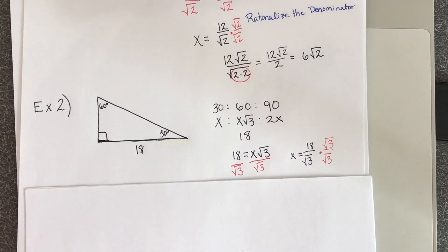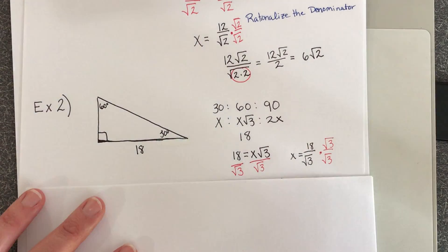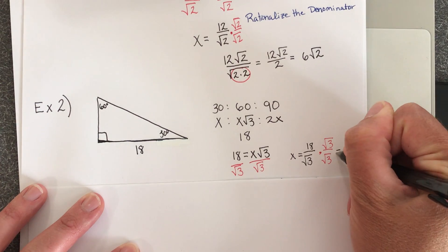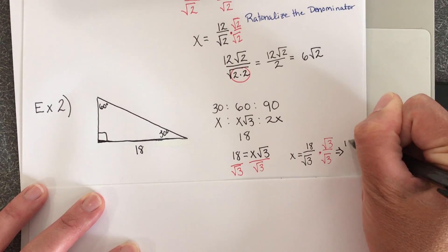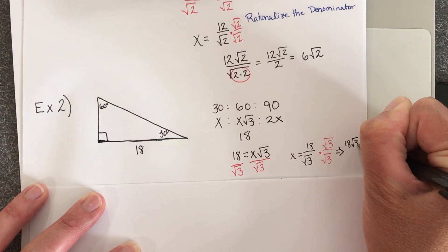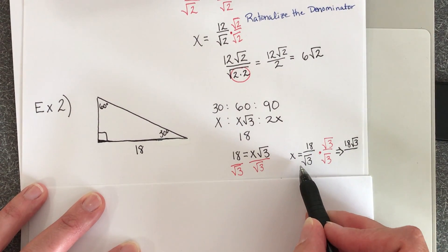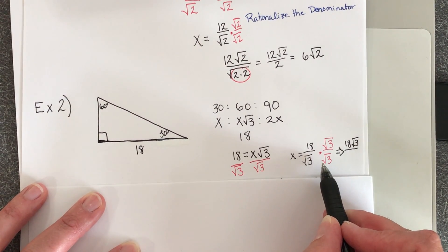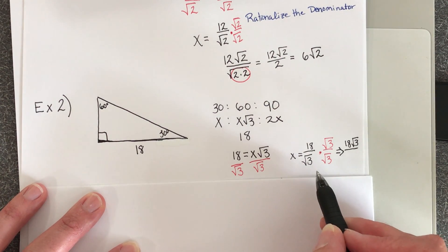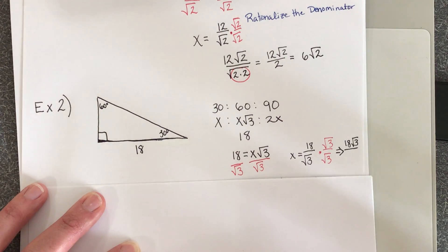So let's continue. Let's keep simplifying. So on the top, I've got 18 times the square root of 3. And as we've already learned, the square root of 3 times the square root of 3 is the square root of 3 times 3, or the square root of 9. And the square root of 9 is 3.